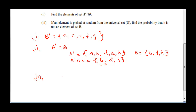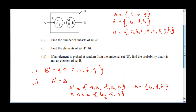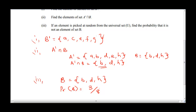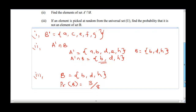Set B gave us B, D, H — so the probability of B is 3 over the total. How many elements do we have in total? Counting: 1, 2, 3, 4, 5, 6, 7, 8 — we have 8 elements. So the probability of B is 3 over 8.